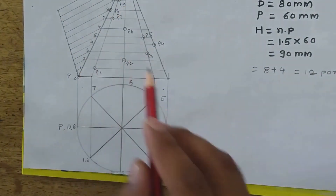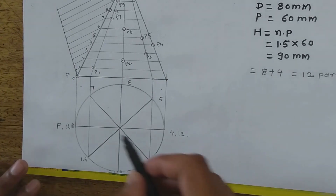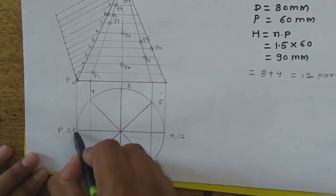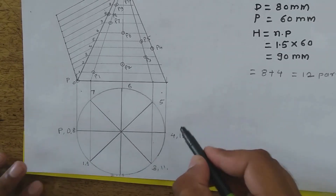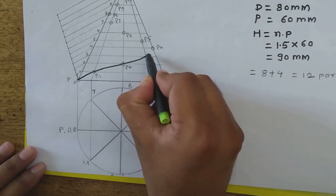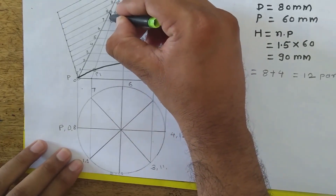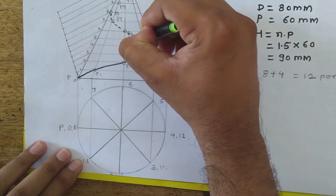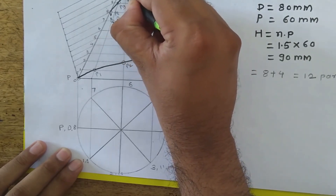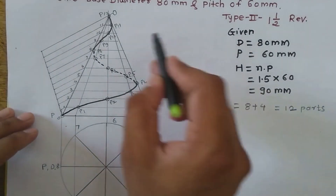Now we join all these points to complete the helix curve. P0 to P4 is drawn as a dark solid line, P4 to P8 is drawn as a dotted hidden line since those points are behind the cone, and P8 to P12 is again drawn as a dark solid line. This completes the helix curve on the cone.